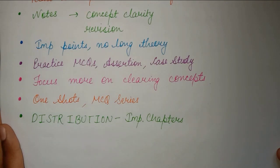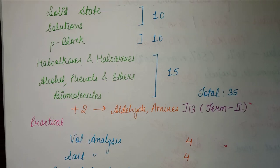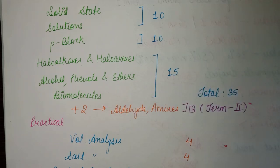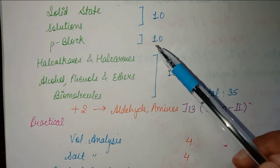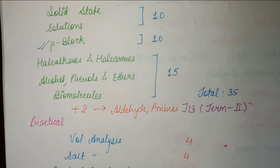Now let's talk about the chapter distribution — which are the important chapters, how many marks each carries, and how to prepare. Also, if you cover some Term 2 syllabus now along with Term 1, you won't have to study as much later since you'll only get around two to three months for preparation. The Term 1 chapters: Solid State and Solutions together carry ten marks. P-block alone covers ten marks — so P-block is the most important chapter. I have already uploaded one shots for both P-block chapters.